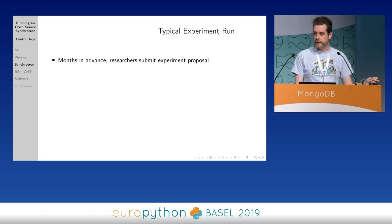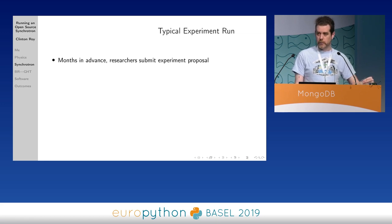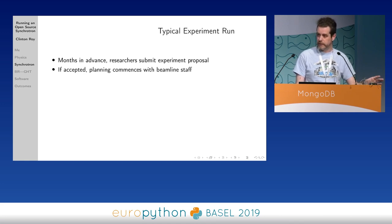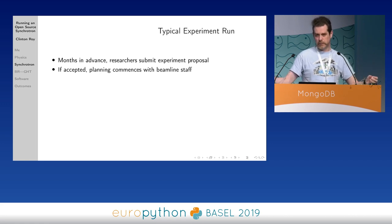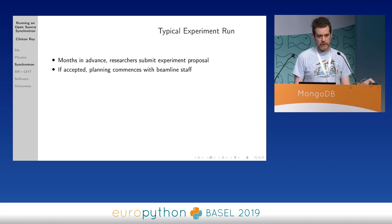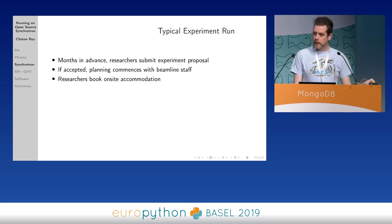Typically, months in advance, researchers submit their experimental proposal. The synchrotron is way oversubscribed, so not everyone who has an idea gets accepted. If their idea has enough academic merit it gets accepted, and then there's a long discussion with the beamline scientists. The experimenter wants to do one thing, the beamline can't quite do that, so they have to come to a middle ground. And of course there are all of the communication issues where everyone thinks they know exactly what's going on, but nobody does.